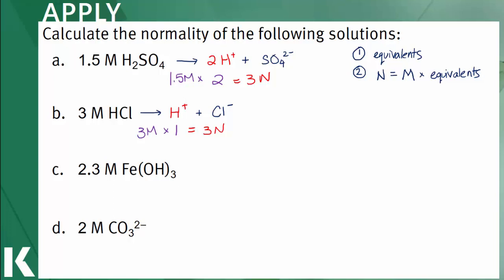In C, iron hydroxide is a strong base and will donate three equivalents of the hydroxide ion. A concentration of 2.3 molar multiplied by 3 equals a normality of 6.9 normal.